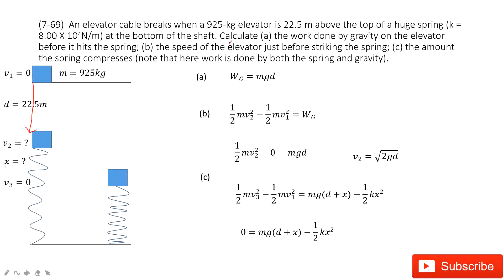The second part asks you to find the speed v2 before it hits the spring. This is a very typical application of the work-energy principle. The initial velocity is 0, so initial kinetic energy is 0. Finally, the kinetic energy is one-half mv2 squared. The net work on the object is due to gravity only. So the change in kinetic energy equals the net work: one-half mv2 squared minus one-half mv1 squared equals the net work, and v1 is 0. So we can very easily get v2 squared equals 2gd. Since g is constant and d is given, you can easily find v2.